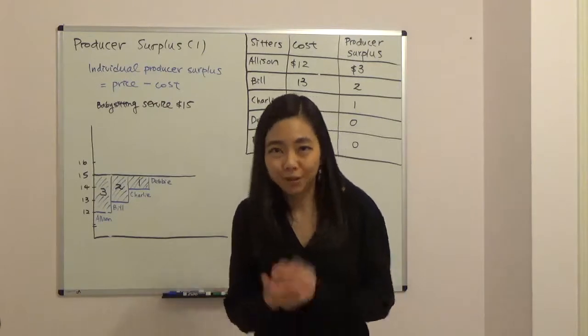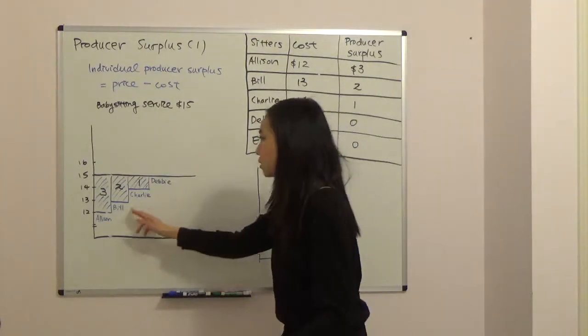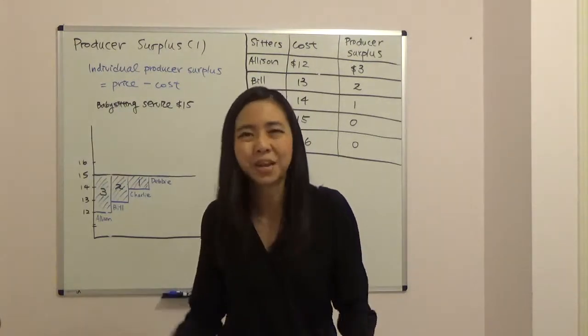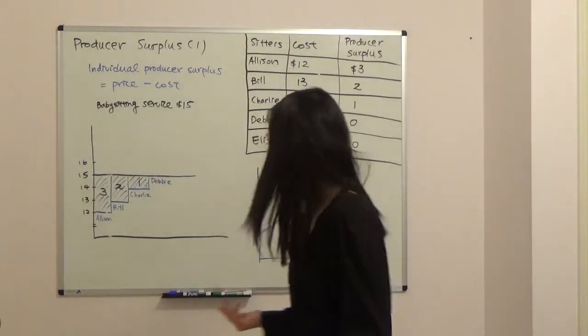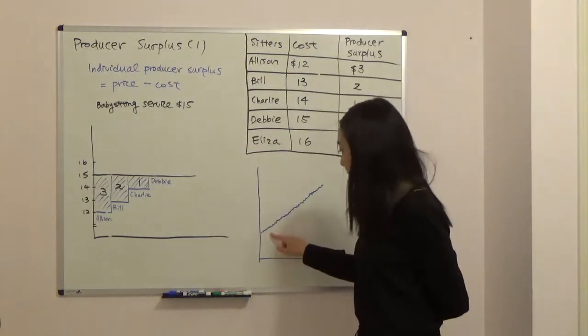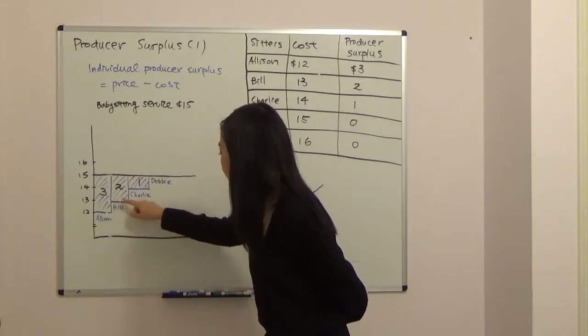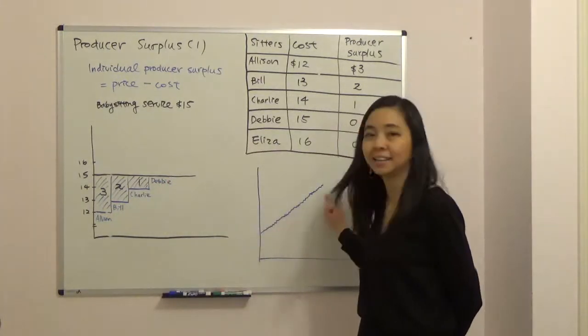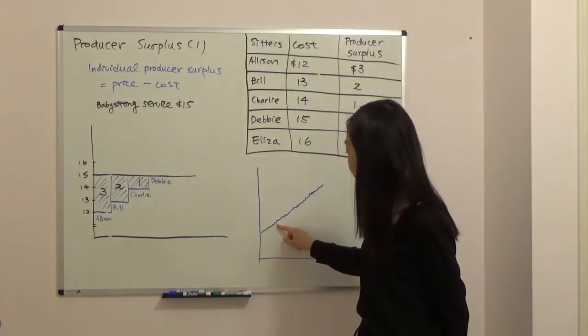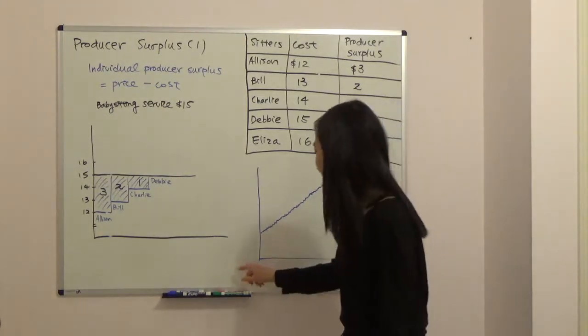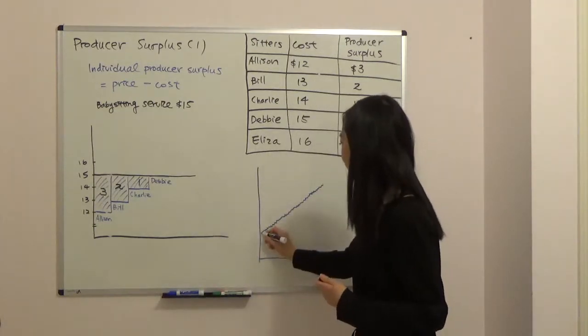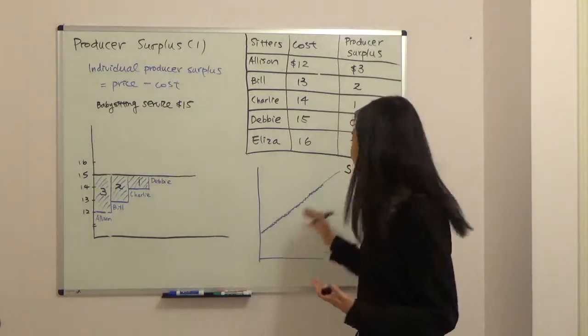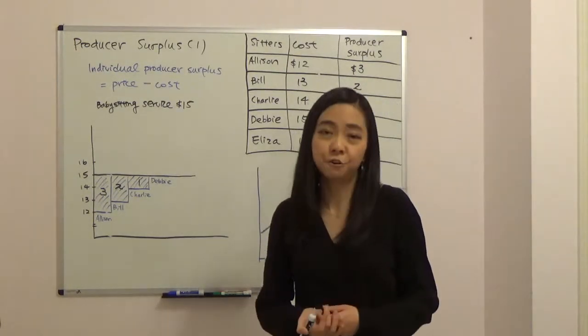Now we know in reality, the market is a lot bigger than just four sellers. Think about Houston, we have lots of babysitters who are trying to look for jobs. When you have a lot of sellers, then your steps that reflect the cost of the producers will become really tiny like this. And tiny steps, each step represents one seller. It's actually just the supply curve that you're familiar with. So now you know supply curve actually reflects the cost of producers.